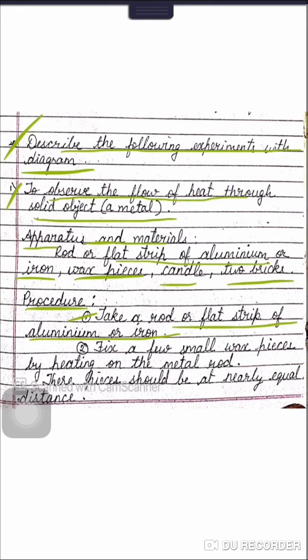Third point: clamp the rod to a stand or put one end of the rod in between the bricks in horizontal direction, in such a way that the wax pieces must remain beneath the rod, as shown in the picture. Now, heat the other end of the rod with the help of a candle.